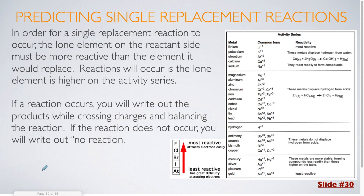In order for a single replacement reaction to occur, the lone element on the reactant side must be more reactive than the element it will replace. Reactions will occur if the lone element is higher on something called the activity series. Now there are two versions of the activity series.